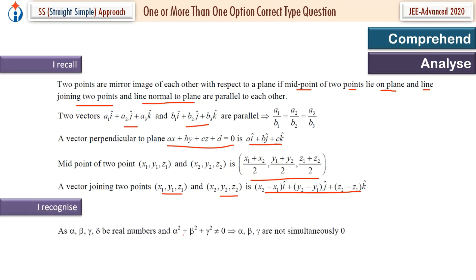Now I recognize α, β, γ, δ are real numbers and this is not equal to 0. So what does it imply? It simply implies that α, β, γ are not simultaneously 0.